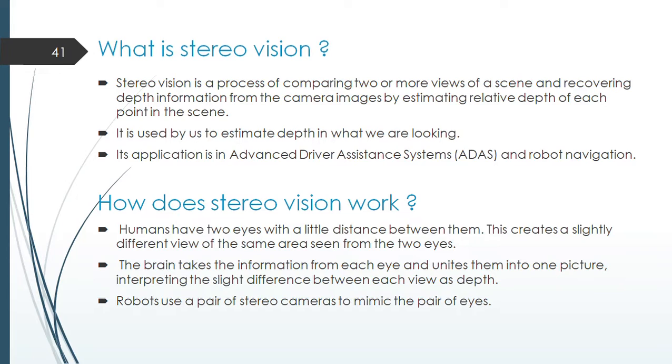How does stereo vision work? Humans have two eyes and a little distance between them. This creates a slightly different view of the same area seen from the two eyes. The brain takes this information from each eye and unites them into one picture, interpreting the slight difference between each view as depth. Robots use a pair of stereo cameras to mimic this pair of eyes.